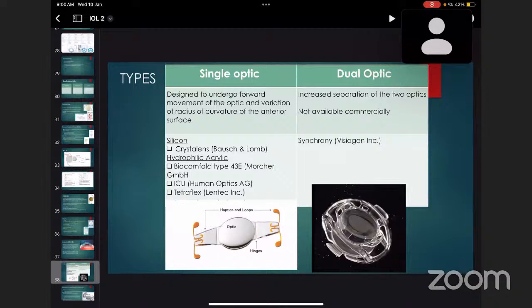Types of accommodative IOL: single optic and dual optic. In single optic, it's designed to undergo forward movement of the optic and variation of radius of curvature of the anterior surface. Examples: in silicone, it's the Crystalens by Bausch and Lomb. In hydrophilic acrylic, it's BioComFold I-43E, ICU, and Tetraflex.